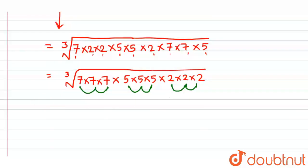Now these terms would come out of the root and it becomes 7 × 5 × 2. So 5 twos are 10, and 10 × 7 is 70.